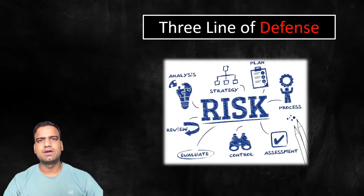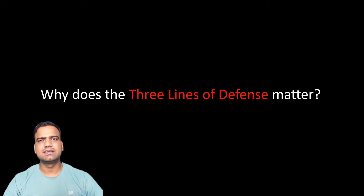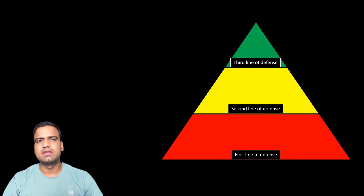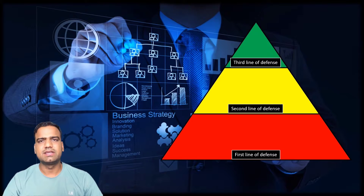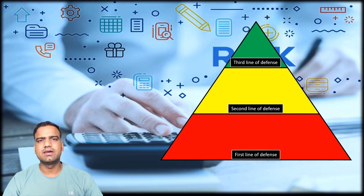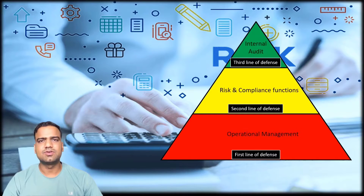Before we move forward, let's understand why these three lines of defense matter. The three lines of defense model has been adopted by various organizations to strengthen their enterprise risk management capabilities across all business units, promoting a resilient enterprise risk management program. This model outlines the distinct roles and responsibilities of risk owners and risk management professionals in effectively addressing and managing risks within an organization.